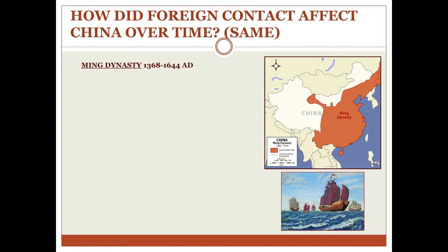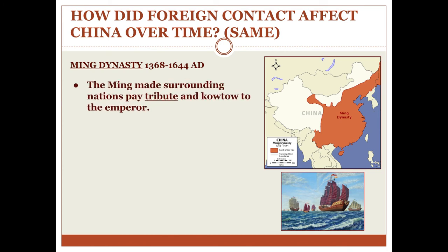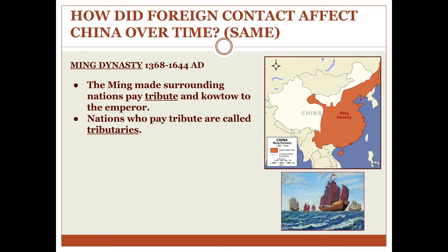Now we're talking about the Ming Dynasty, which existed from 1368 to 1644 CE. The Ming were very arrogant and made surrounding nations pay them tribute and kowtow to the emperor. The Ming would literally force the leaders of surrounding countries to come to Beijing, bow to the emperor, and pay money just for the privilege of trading with China. A country that pays tribute is called a tributary — a multiple-meaning word, since in geography a tributary is a smaller river emptying into a larger one. Here it's a smaller country emptying its money into the larger Chinese empire.